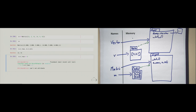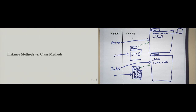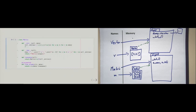Now let's continue with the next topic: instance methods versus class methods. Let's look at a new version of the matrix class. I want to shift focus to the transpose function. What is transpose? Every matrix, once it exists, can be transposed. Transposition means flipping the rows and the columns.